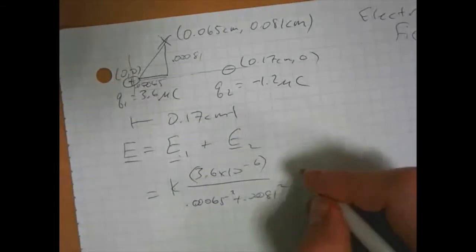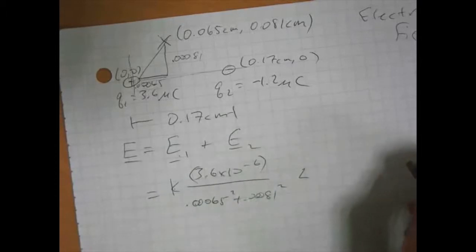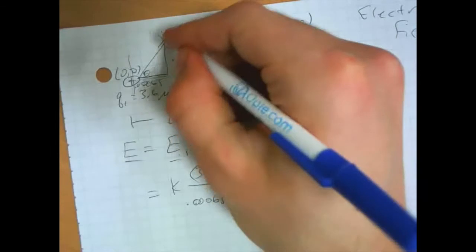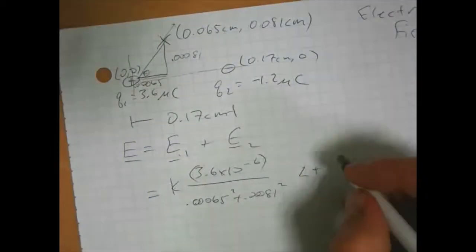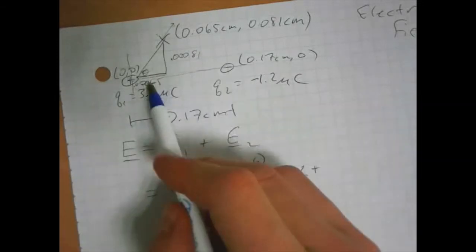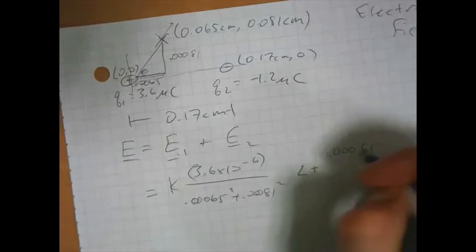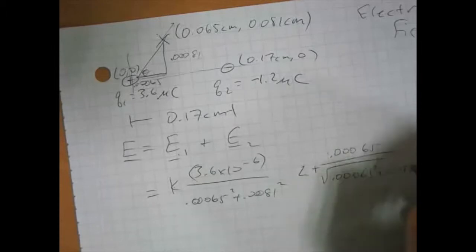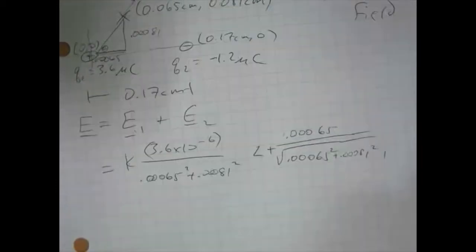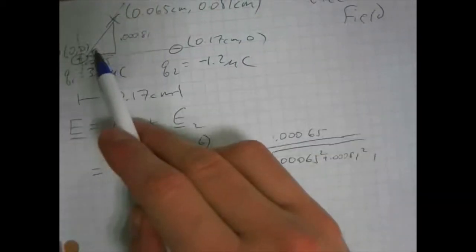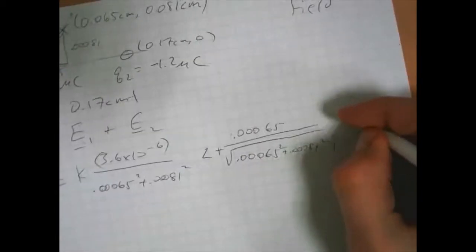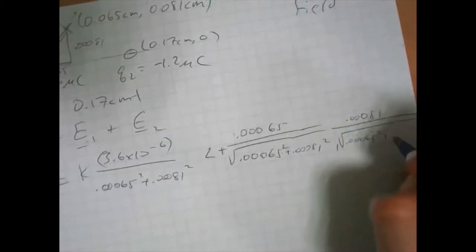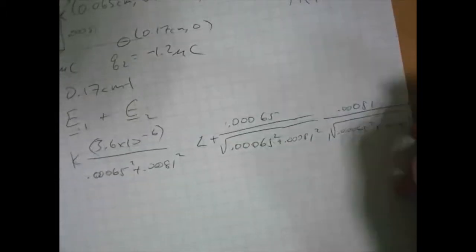That is the magnitude of the field, and then we would need to do our vectors. That's our angle, the x component. This is going to be up and to the right, so it's a positive x component and positive y component. This is the cosine of theta, which is adjacent over hypotenuse. So this is the 0.00065 over the square root of 0.00065 squared plus 0.00081 squared. And then the y component is the sine of theta, which is opposite over hypotenuse. So that is 0.00081 over root of that stuff again. That's our first electric field vector.